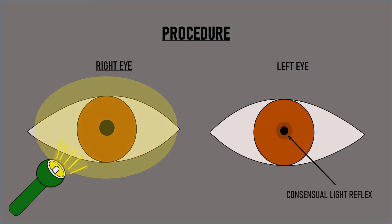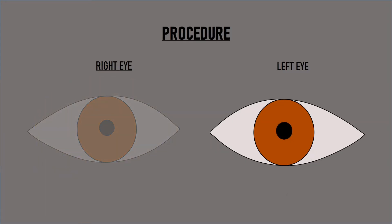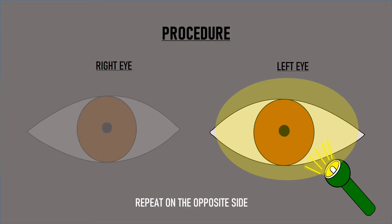Then we repeat the procedure on the other side to check the direct and the consensual light reflex to light stimulus given on the opposite side.